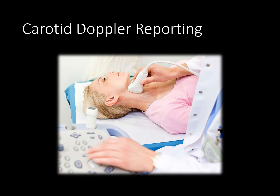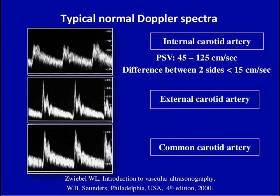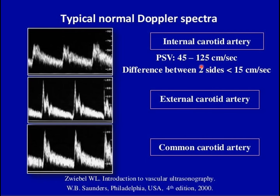For carotid Doppler reporting, we assess the common carotid artery, external carotid artery, and internal carotid artery. We take peak systolic velocities and diastolic velocities of these three vessels. We can compare all three vessels of the right side with each other, then left side with each other, and then with the contralateral side. The normal peak systolic velocity of the internal carotid artery ranges from 45 to 125 centimeters per second.